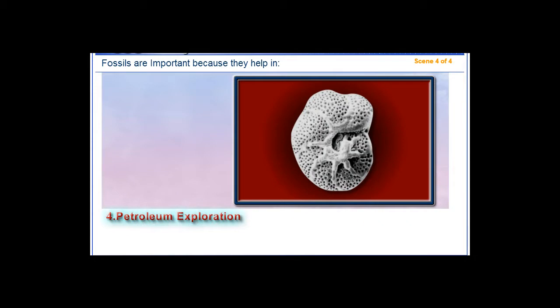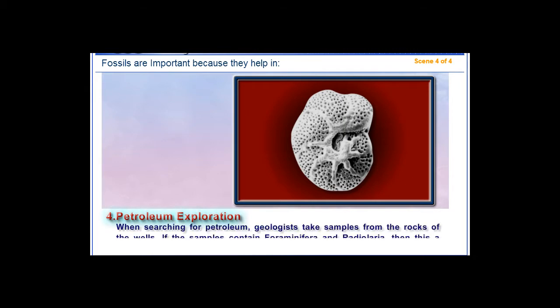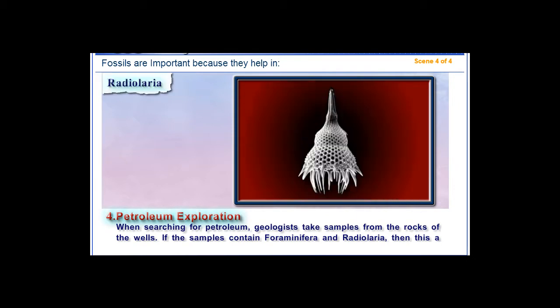4. Petroleum Exploration. When searching for petroleum, geologists take samples from the rocks of the wells. If the samples contain foraminifera and radularia, then this is a good indication for petroleum formation.